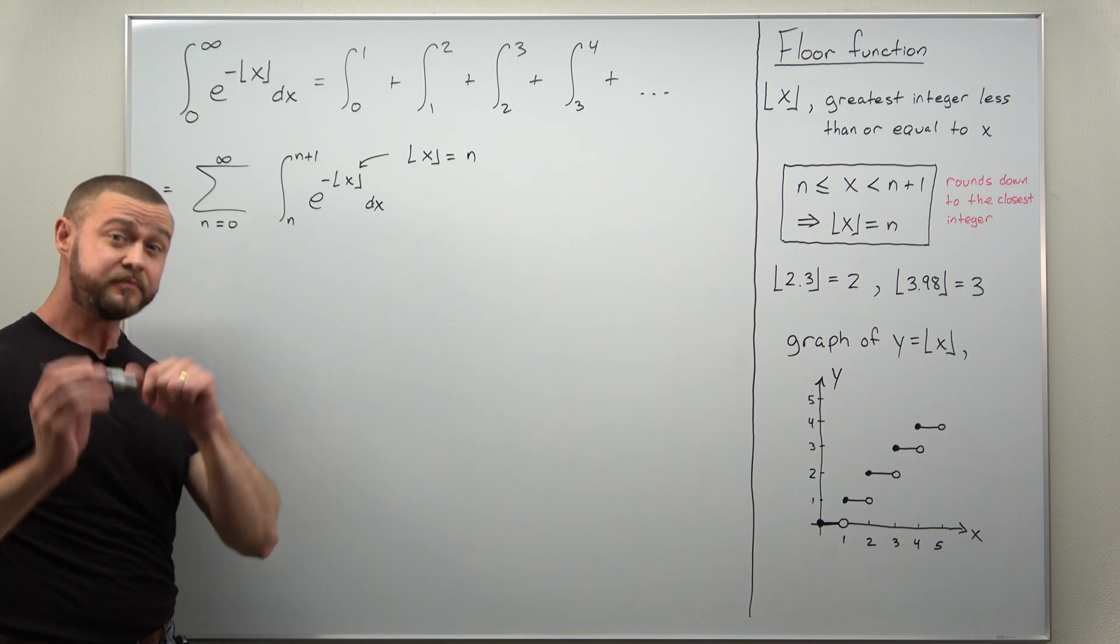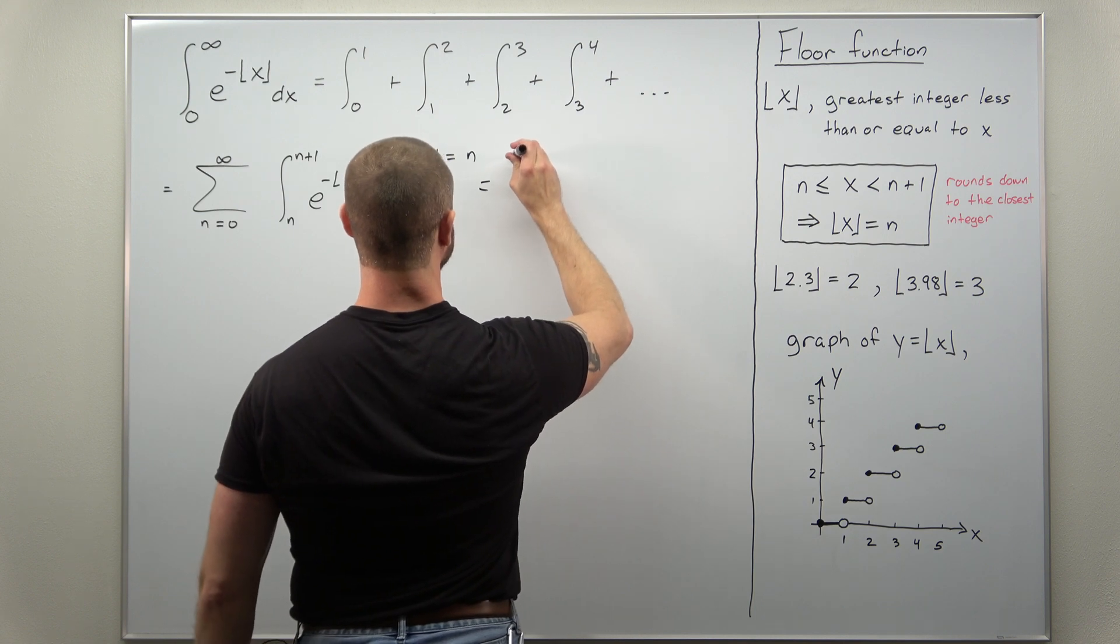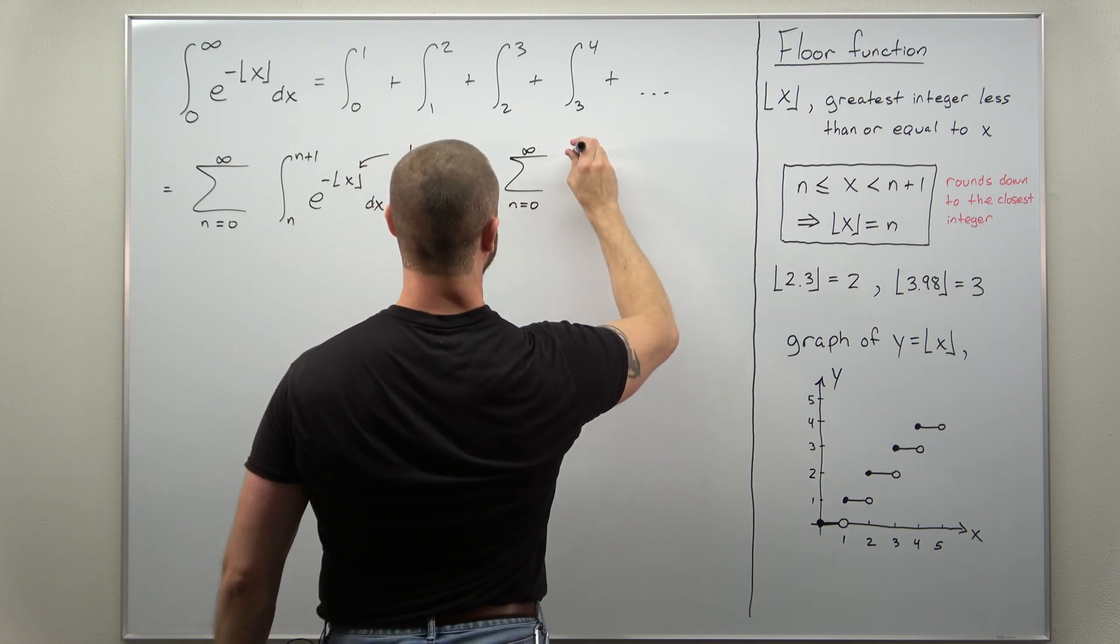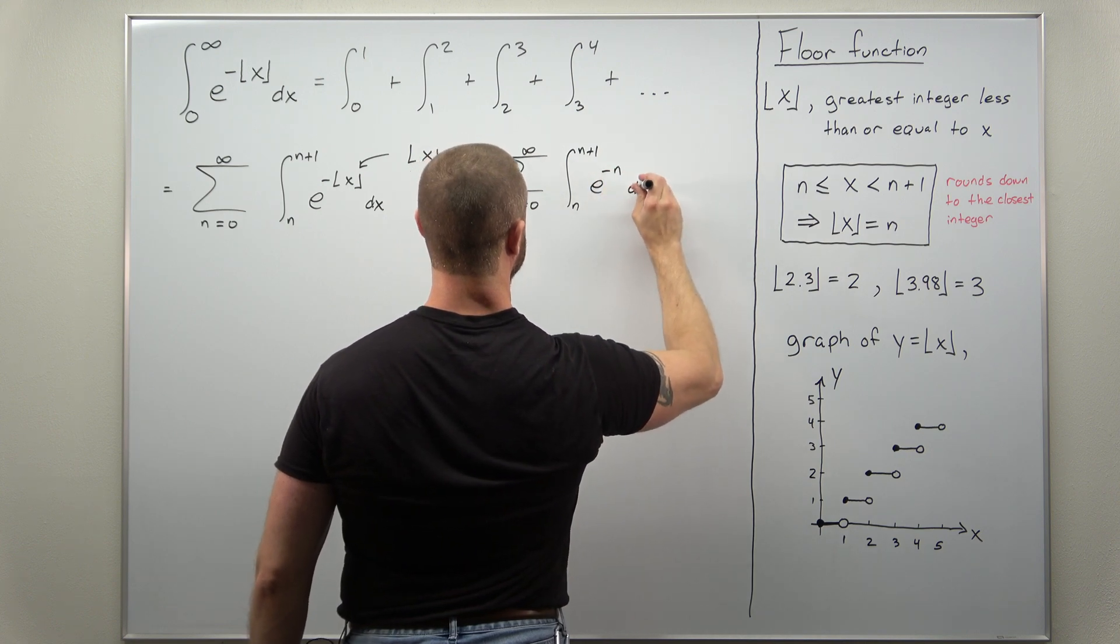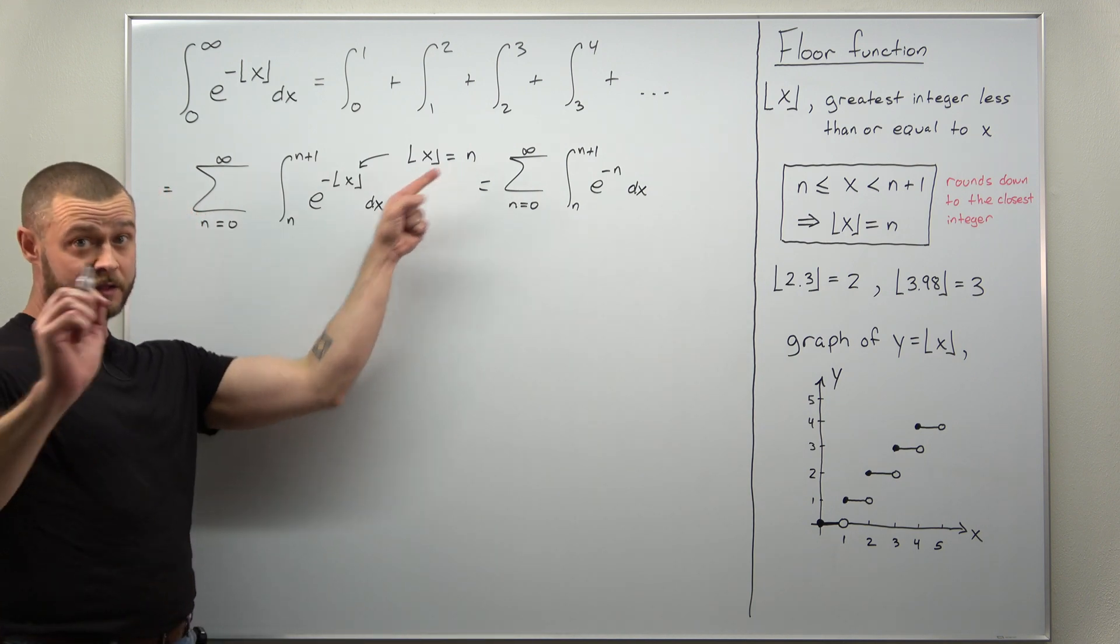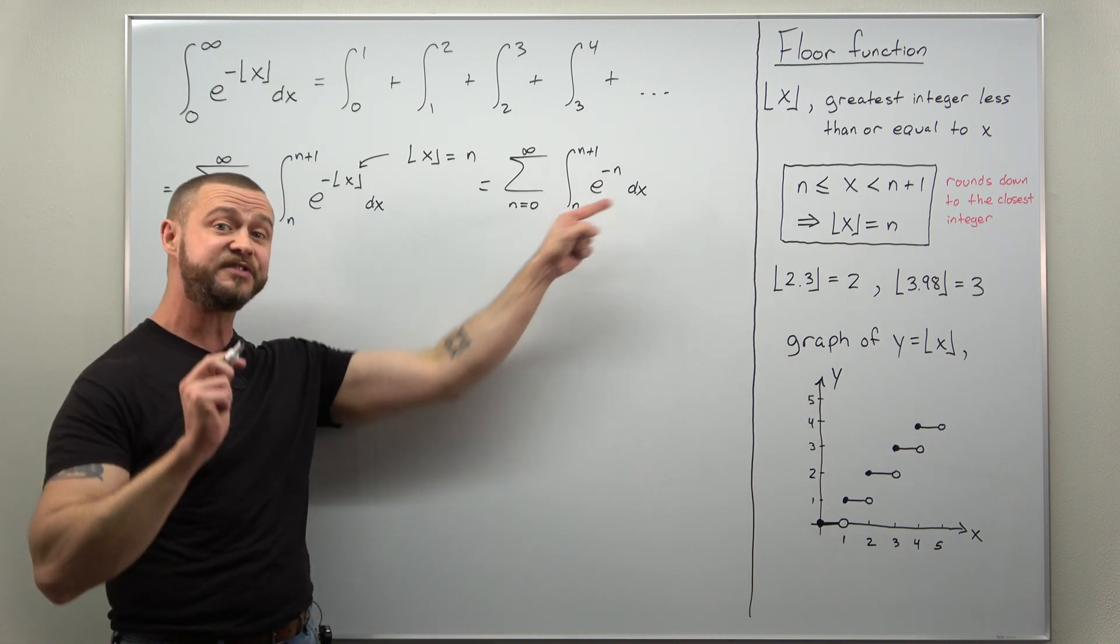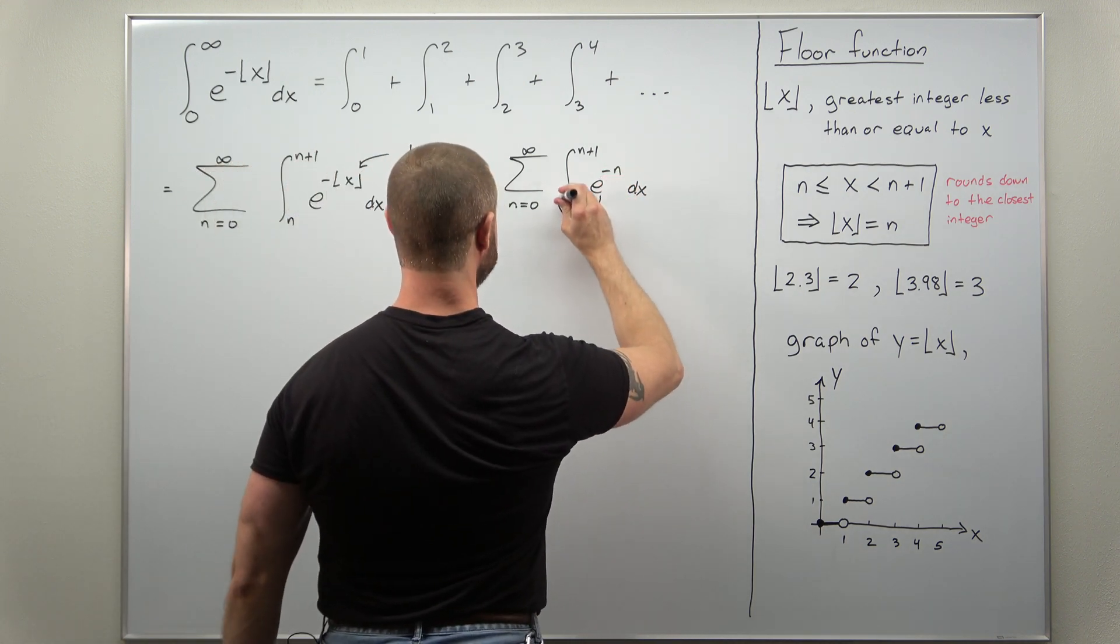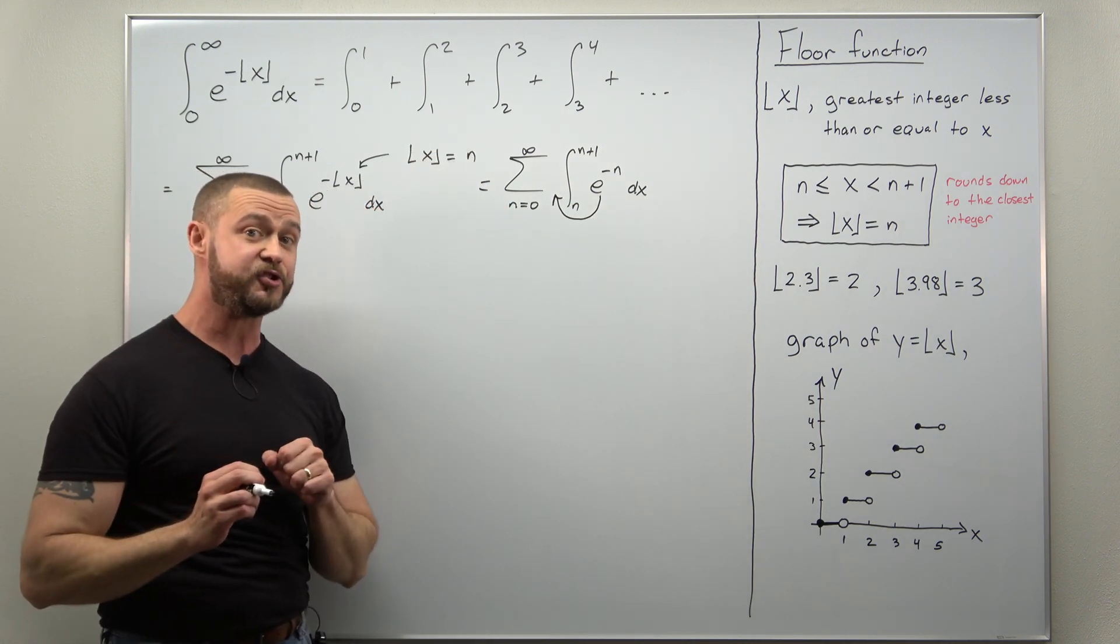And what we get is now a very simple integral. We can go ahead and rewrite this as the sum from n equals 0 to infinity. Our integral goes from n to n plus 1. And now we're replacing the floor function of x with its value which is just n here. Now notice we're integrating this with respect to x but our function now only depends on n. So I can pull this constant e to the negative n in front of the integral but be careful. You can't pull it in front of the summation over n.